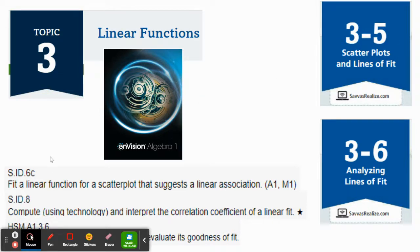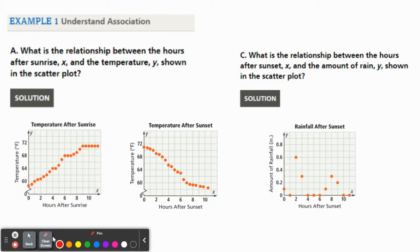Example one, understand association. It says, what is the relationship between the hours after sunrise X and the temperature Y shown in the scatter plot? The first graph here is your hours after sunrise and then the temperature. As you go from early in the morning to the afternoon as the sun is rising, you're going to get warmer.